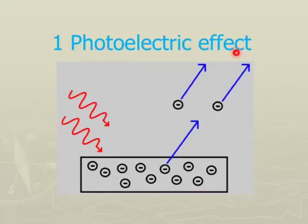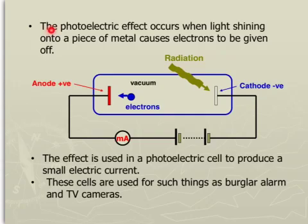Photoelectric effect. The photoelectric effect occurs when light shining onto a piece of metal causes electrons to be given off.